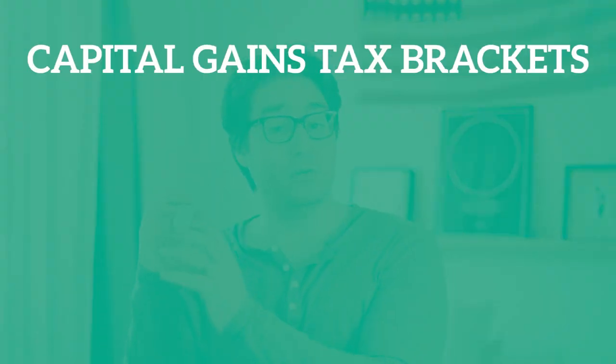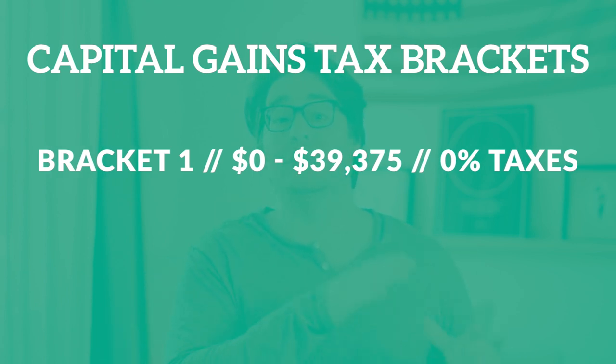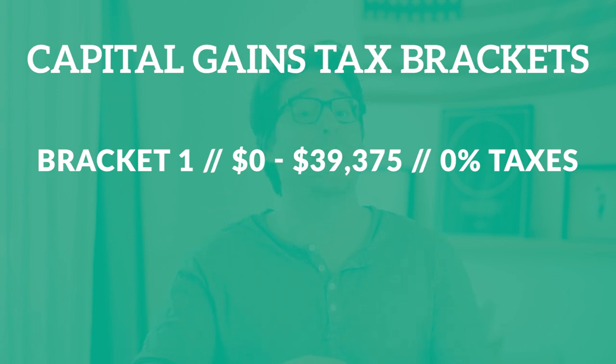Long-term capital gains, unlike income tax levels, have only three tax brackets. Capital gains tax rates tend to shift around under each presidential administration, so the dollar amounts here are only relevant to our current political climate. If you make between $0 and $39,375 per year, you actually have the awesome advantage of paying 0% on your capital gains.